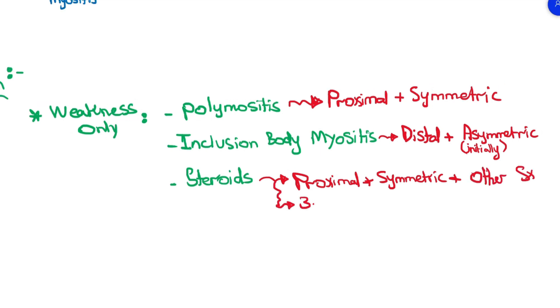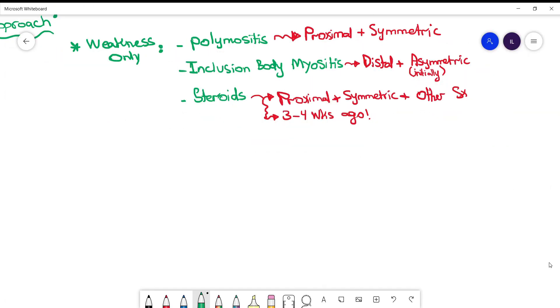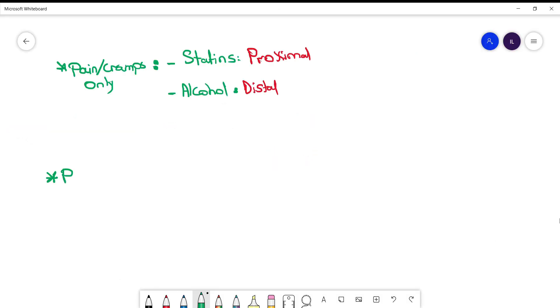Steroids cause proximal and usually symmetrical involvement. You can differentiate it from polymyositis because they have other manifestations, and the patient would mention they started steroids around a month ago. If the patient presents with pain or cramps in the muscles without any weakness, the differential is statin or alcohol.